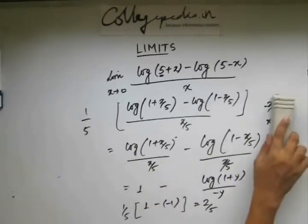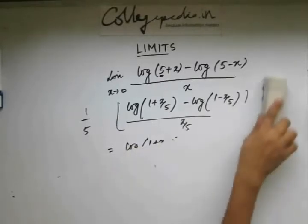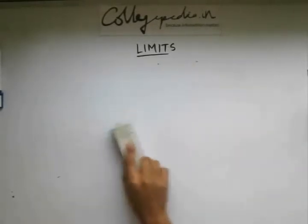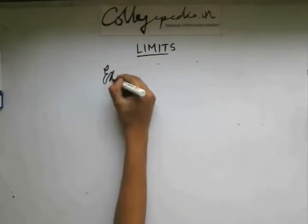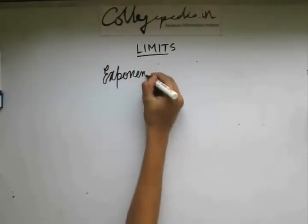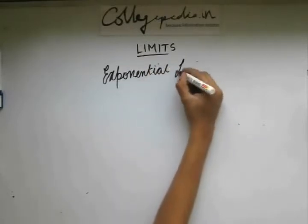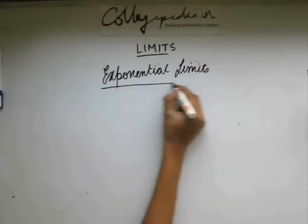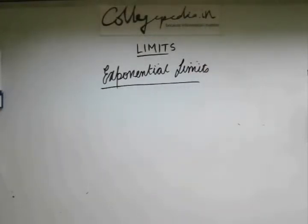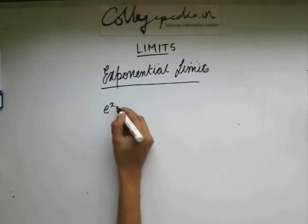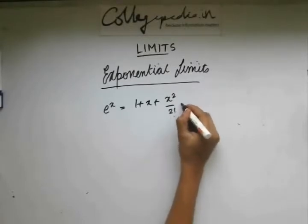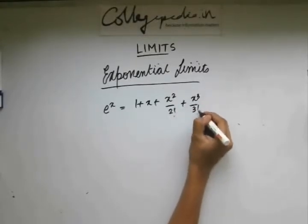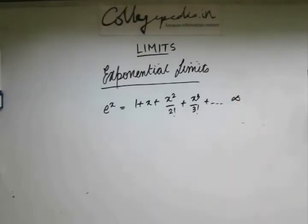So we're done with logarithmic limits. Now let's move on to the next part, that is exponential limits. Let's see how to evaluate exponential limits. Again, you should know the basic series expansion for e to the power x, which is equal to 1 plus x plus x square by 2 factorial, and so on.